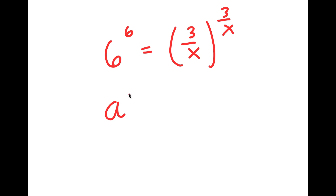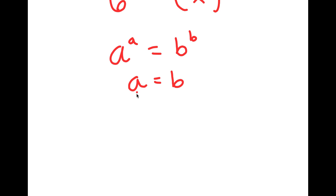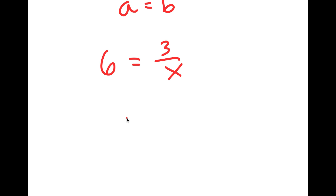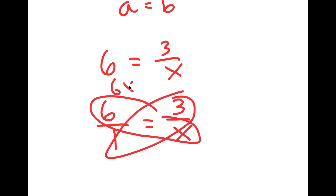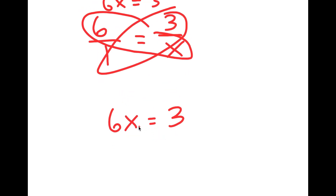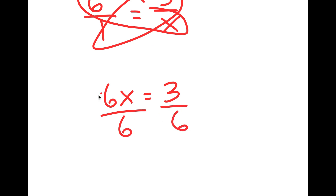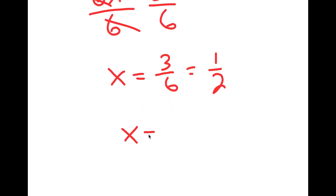If I have something in the form a to the power of a is equal to b to the power of b, this means that a is equal to b. So in this case, 6 is going to equal 3 over x. I can solve this using proportions: 6 over 1 equals 3 over x. Cross multiplying gives 6x equals 3. Dividing both sides by 6, I get x is equal to 3 over 6, which simplifies to 1 half.